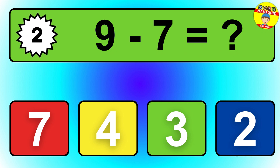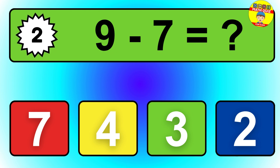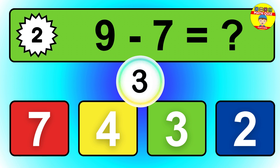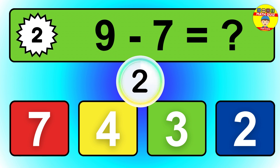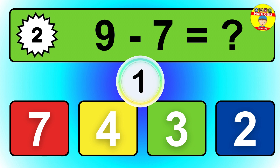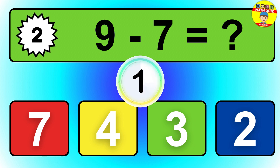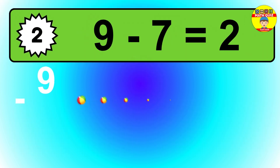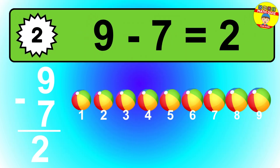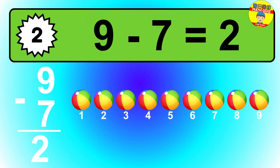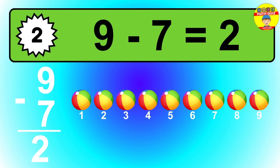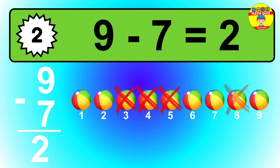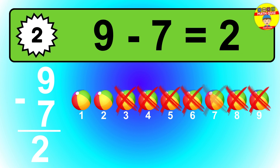Question 2. 9 minus 7 equals what? So the answer is 9 minus 7 is 2. Let's count it: 1, 2.